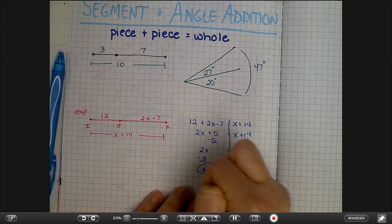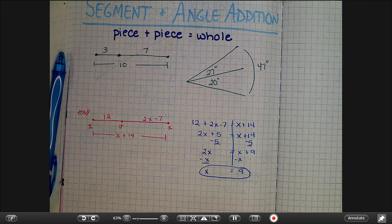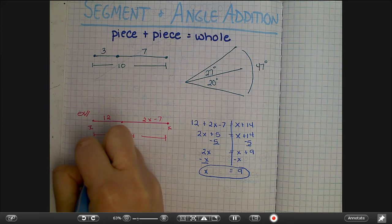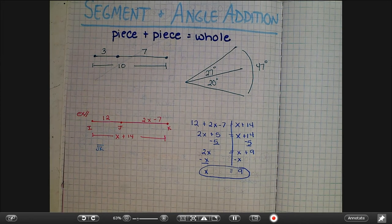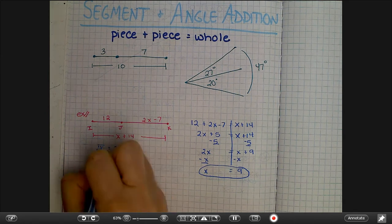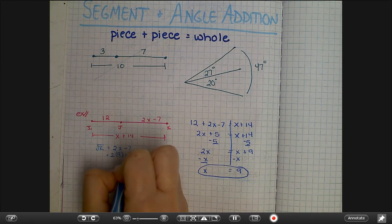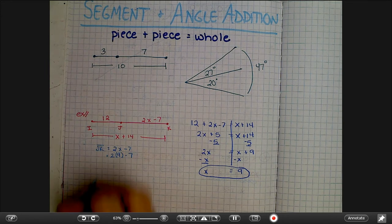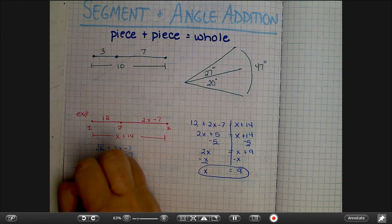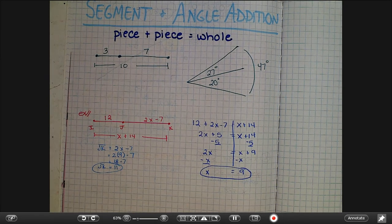All right, so we know that x equals 9. But sometimes for these types of questions what they really want to know is, say, how long is segment JK? And if we want to know that we just have to substitute our x which is 9 and simplify the expression. So the length of JK is 11.